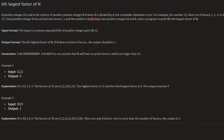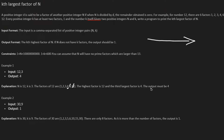You have to write a program to print the kth largest factor of n. If we are given 12 and k is 3, we have to print the third largest factor. The first largest will be 12, the second largest will be 6, and the third one will be 4. If you have learned any other programming language, you might think of using a simple loop going till the given number n to find the factors.